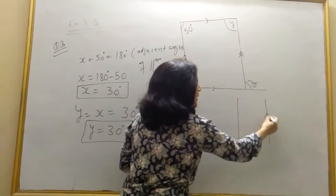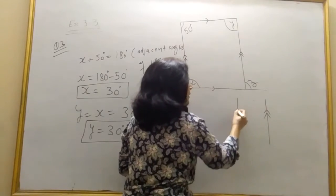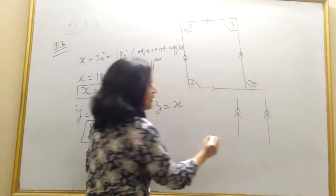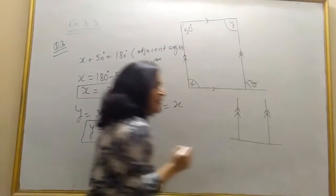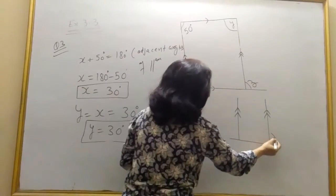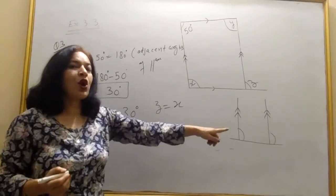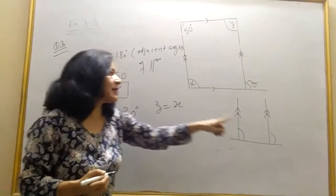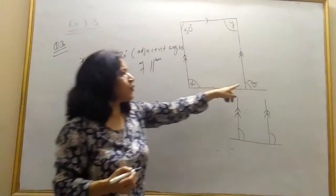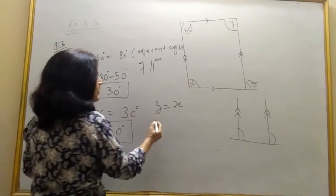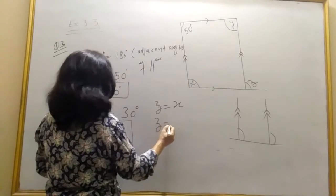These are parallel lines. This line and this line, and this is a transversal. And you know one outside, another inside. What are corresponding angles. So x is equal to z, corresponding angle.